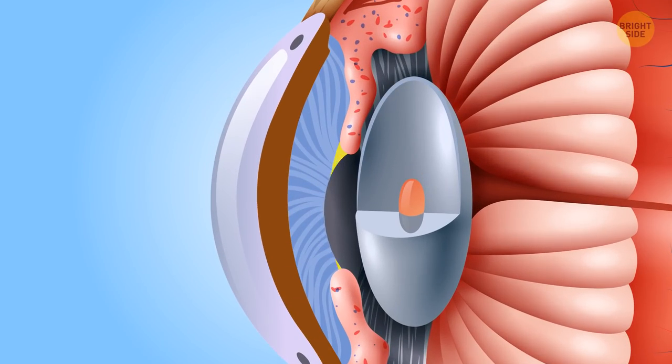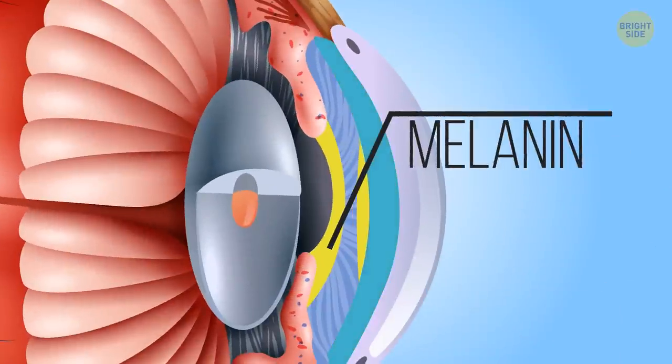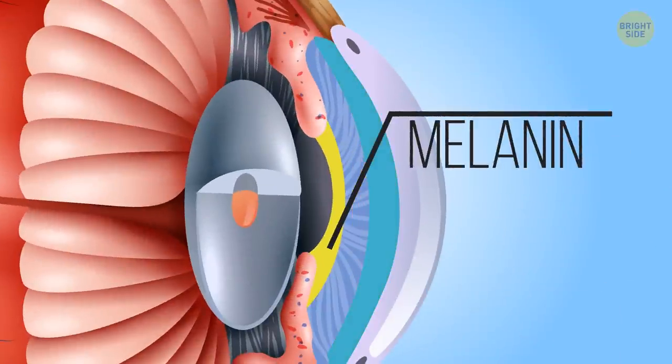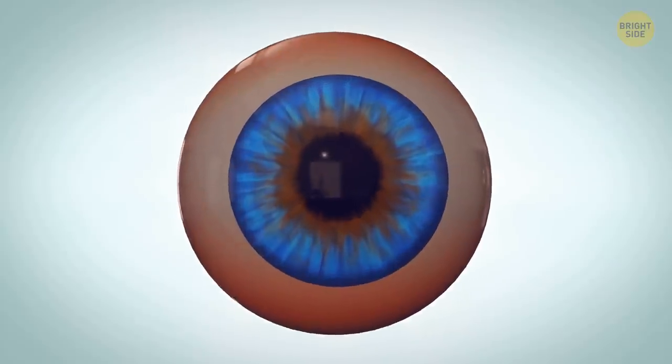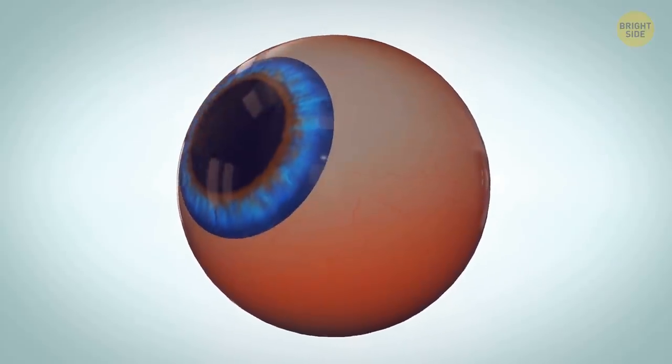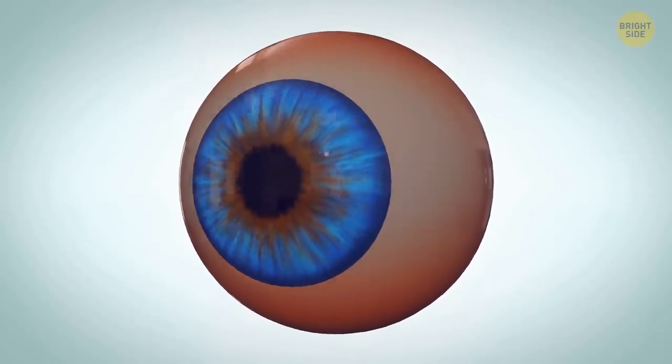Brown-eyed people have a lot of melanin in both layers of the iris. Blue-eyed people don't have melanin in the front layer. So basically, their eyes have no color. But they just appear to be blue because of the scattered light.